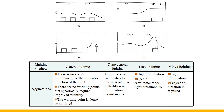Figure B is zone general lighting, suitable for areas with different illumination requirements in the room, such as open-plan offices. Figure C is local illumination. It is usually set in places with high illuminance requirements or special requirements for light direction, serving specific visual work and only illuminating a small area. It should not be used alone so as not to cause great brightness contrast.